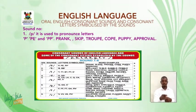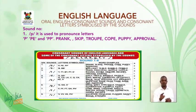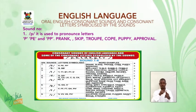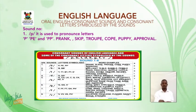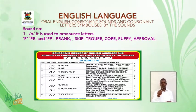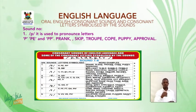Sound number one: /p/. It is used to pronounce letters P, PE, and PP. Word examples: prank, skip, troop, cope, poppy, approval.